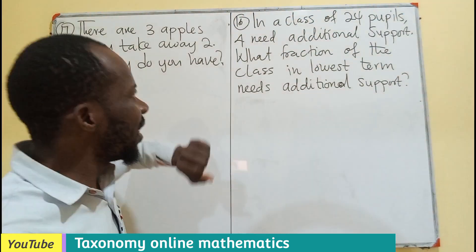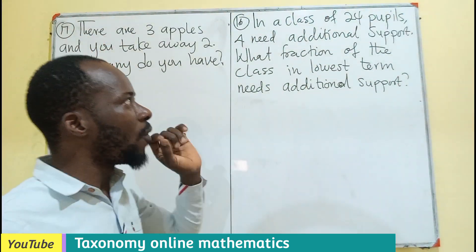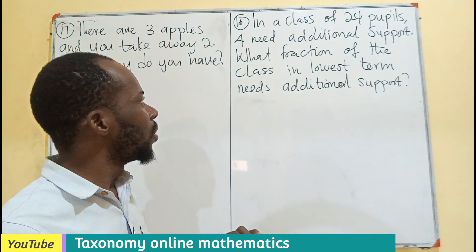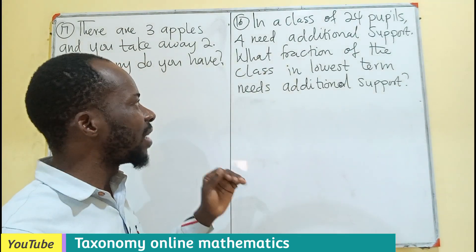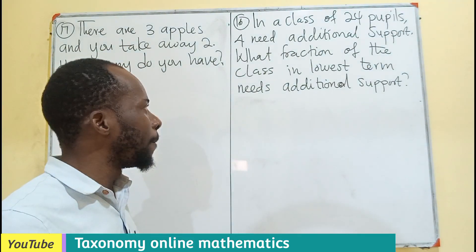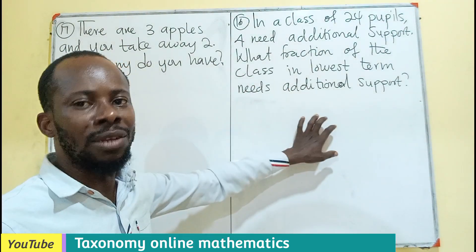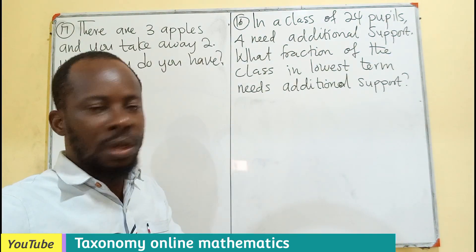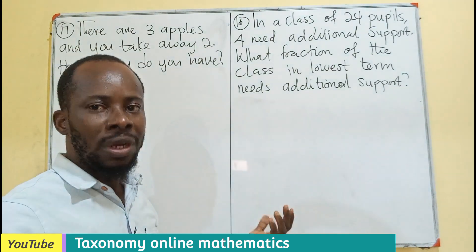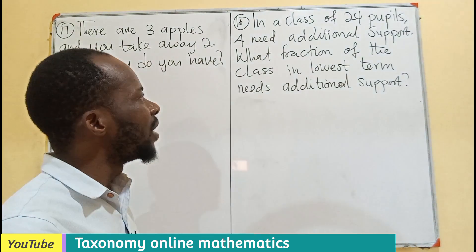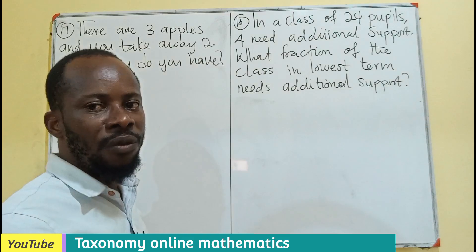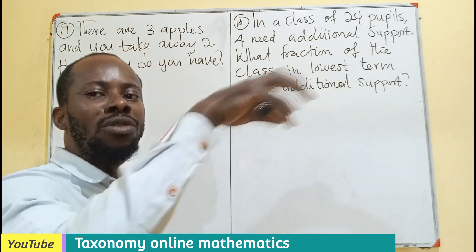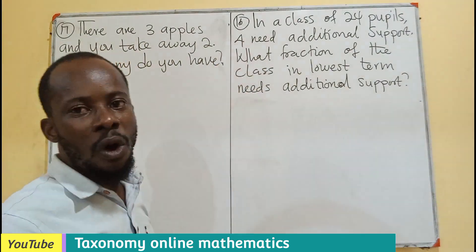Question 16. In a class of 24 pupils, 4 need additional support. What fraction of the class in the lowest term need the additional support? We know fraction is always part of a whole. Here, what is the whole? The total number of people in a class. The whole is going to be 24. Then what is the part of the class that need the additional support? That is 4 of them.